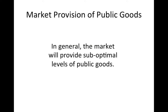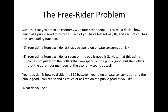In general, the market will provide sub-optimal levels of public goods. The reason is that it is possible for people to enjoy the benefits of public goods without paying for them. Given this, private producers have little incentive to provide public goods, as there is no way to recoup their costs of production by charging for the good. This problem is characterized by a condition known as the free rider problem.